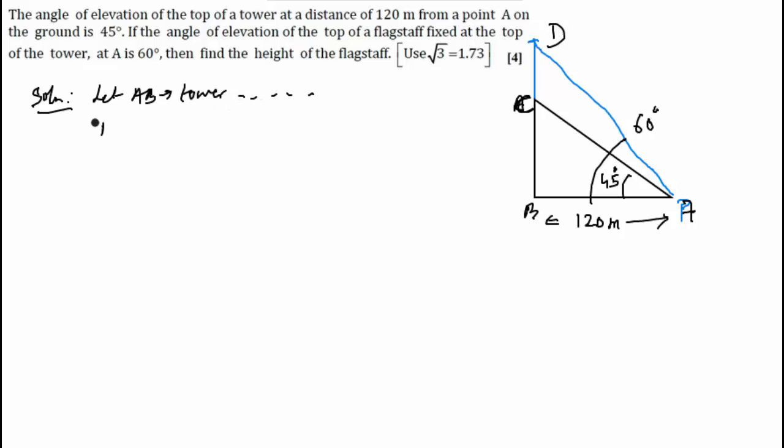Then to find, we need to find CD. We'll find CD by finding BD and BC and then subtracting. So first we'll find out, consider triangle ABC. In triangle ABC, tan 45 is equal to BC by AB. Tan 45 is 1, BC by 120. This implies BC is equal to 120 meters.